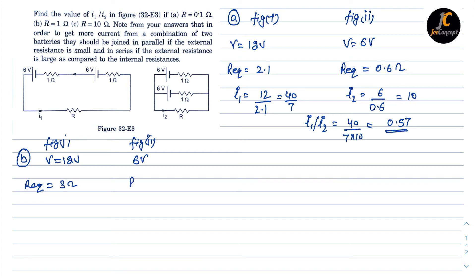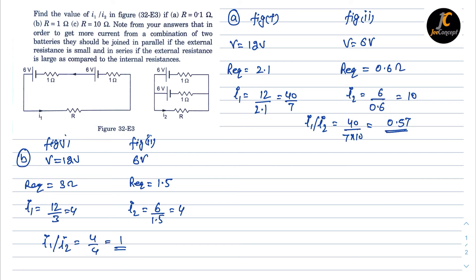For figure 2, R is 1 ohm and the two 1-ohm internal resistances are in parallel, giving an equivalent resistance of 1.5 ohms. i1 equals 12 by 3, which is 4, and i2 equals 6 upon 1.5, which is also 4. So the ratio i1 by i2 is 4 by 4, or 1. This is the solution for part b.